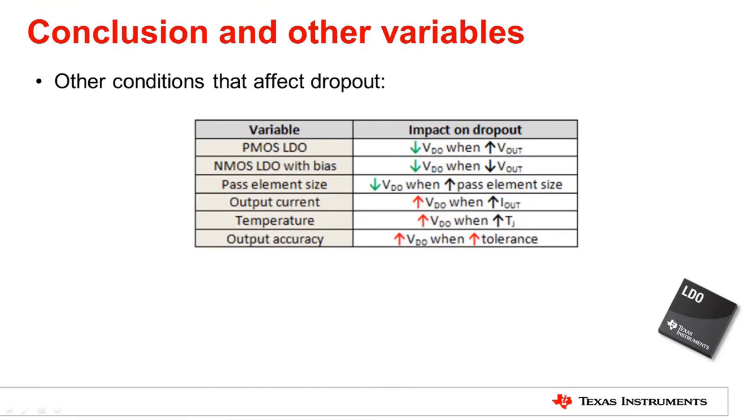Here are other variables that can affect the dropout of an LDO. As we've discussed, the main one is architecture, but the size of the pass element, or FET, will also affect the dropout. A larger size FET will yield a lower dropout. Output current and temperature also affect dropout. As both increase, so too will the dropout. It's clear that dropout is not a static value. But rather than complicating your LDO choice, these variables should help you choose the optimal LDO for your specific conditions.